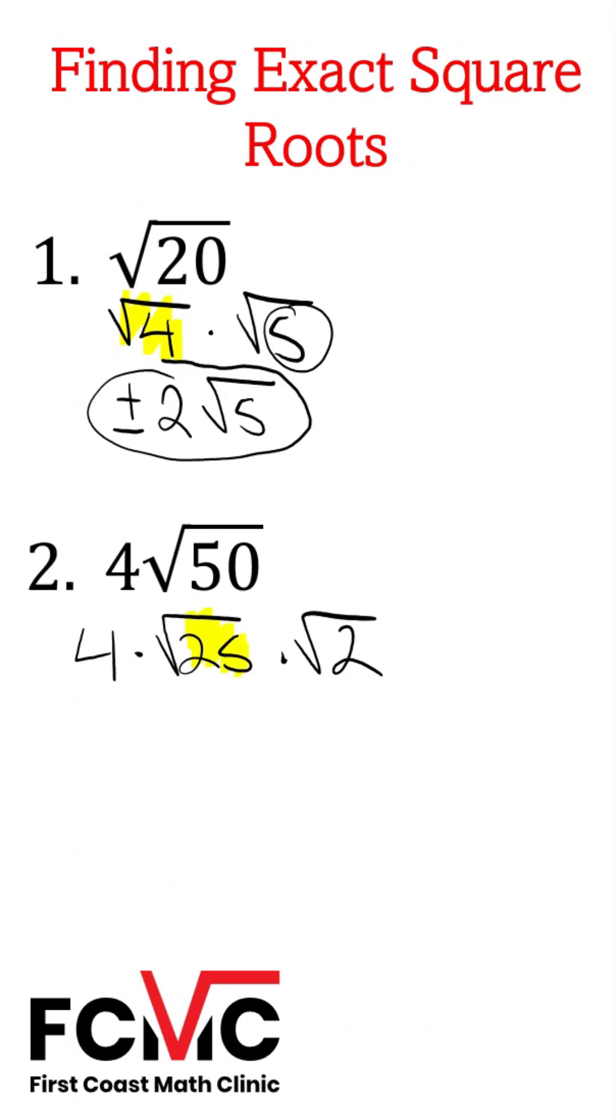25 is our perfect square now. Square root of 25 is positive and negative 5. I'll pull that up front using the commutative property. Times 4 times square root of 2.